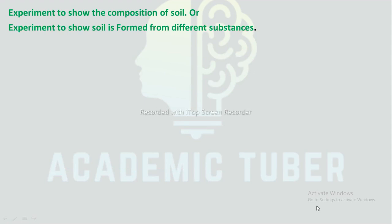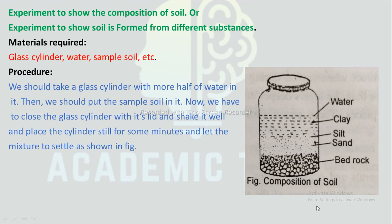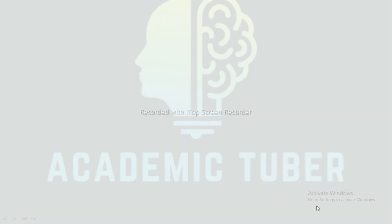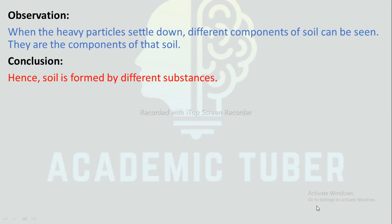Experiment to show the composition of soil: Materials required — glass cylinder, water, sample soil. Procedure: Take a glass cylinder with more than half water in it, then put the sample soil in it. Close the glass cylinder with its lid, shake it well, and place it still for some minutes to let the mixture settle. When the heavy particles settle down, different components of soil can be seen. Conclusion: Soil is formed from different substances.